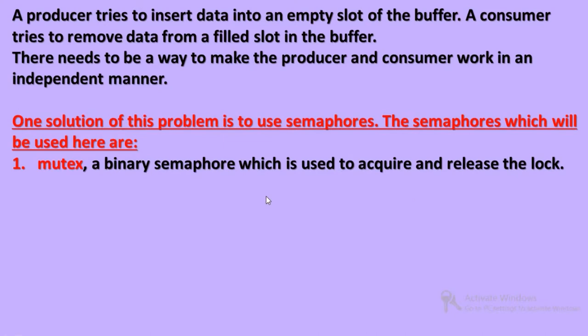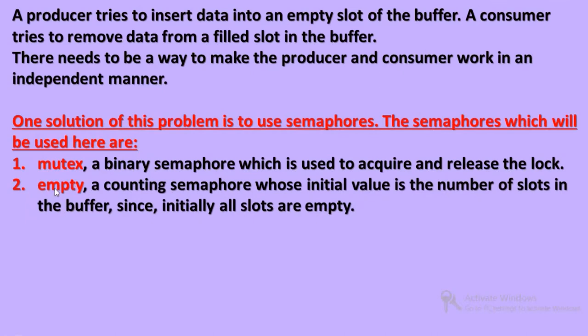The second semaphore we call the empty semaphore. It is a counting semaphore whose initial value is the number of slots. So here the initial value is the number of slots in the buffer. For example, if we have 7 slots, the number of empty slots is 7 initially — all slots are empty.